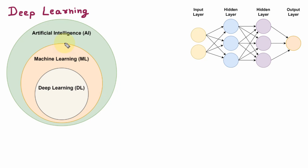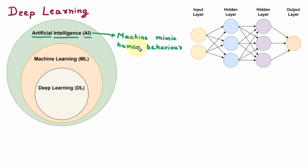Hello everyone, my name is Ankit Vama. The topic for today is Deep Learning. To understand this, first of all we are taking this diagram. Here we are having Artificial Intelligence. AI is a technique which enables machines to mimic human behavior. Whatever we are training the machine, the machine is doing that — just like expert systems, genetic algorithms, search algorithms, and knowledge representation.